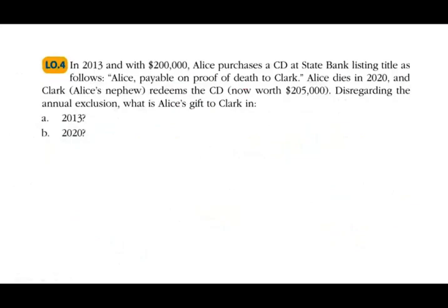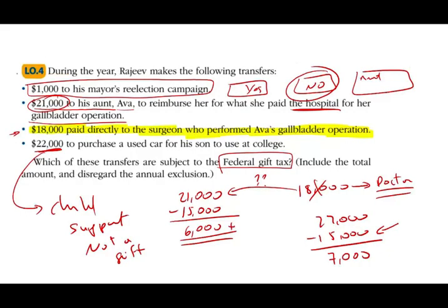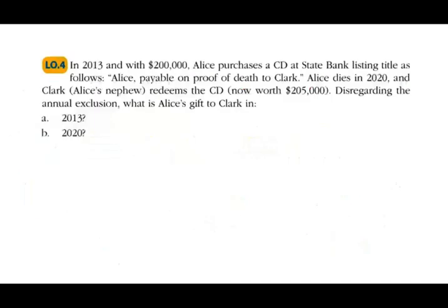Let's take a look at this simulation. Rather than giving you the information directly, they can give you an exhibit with the closing costs for the car, and maybe an email between the son and the father — 'I'd like to buy this car,' and the father responds, 'I can pay up to $22,000.' So in the simulation they try to make it look intimidating, but as long as you know the concepts, you'll be able to tackle it.